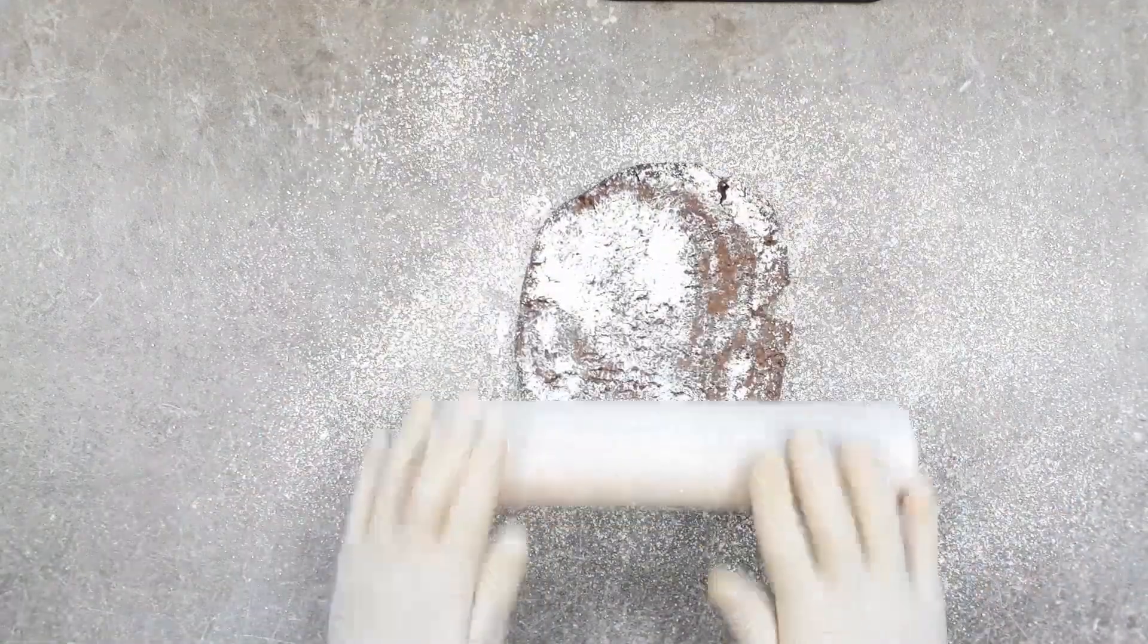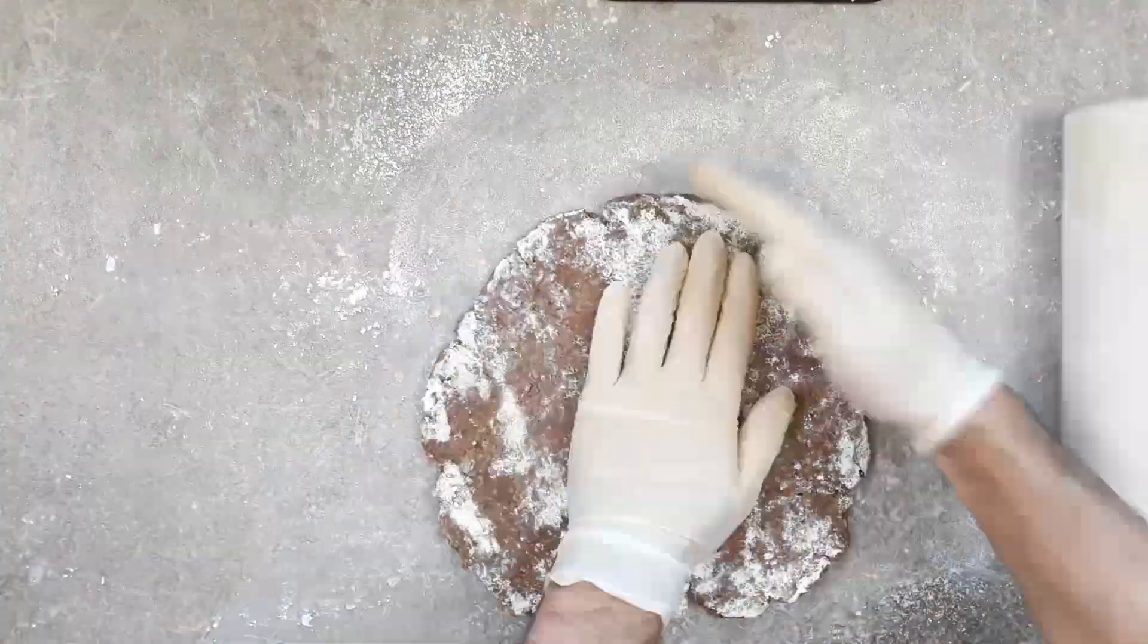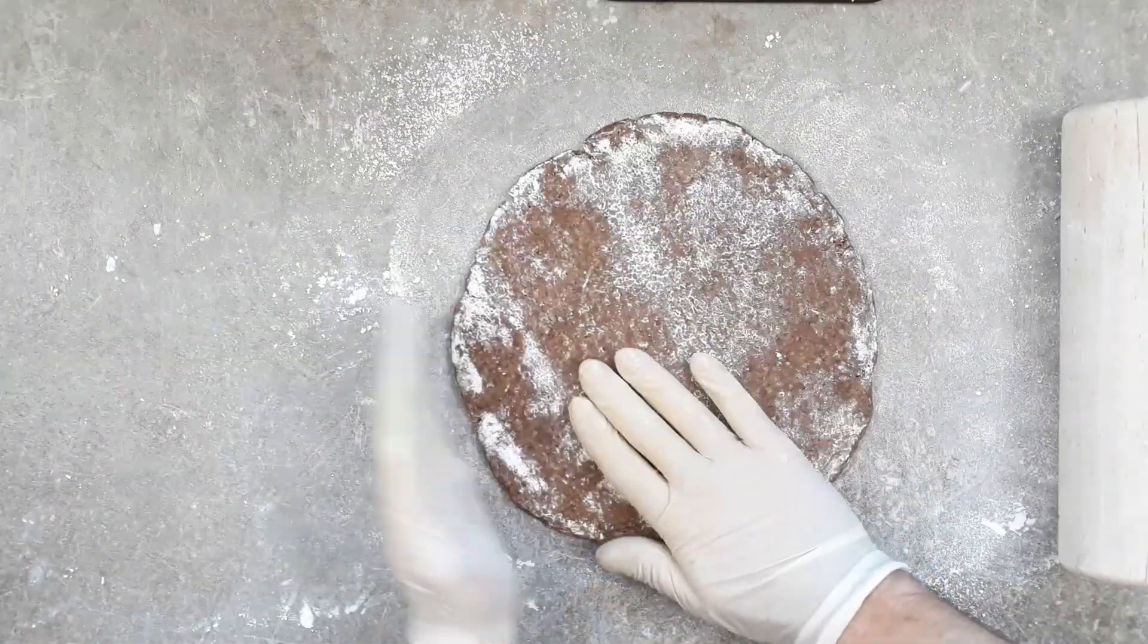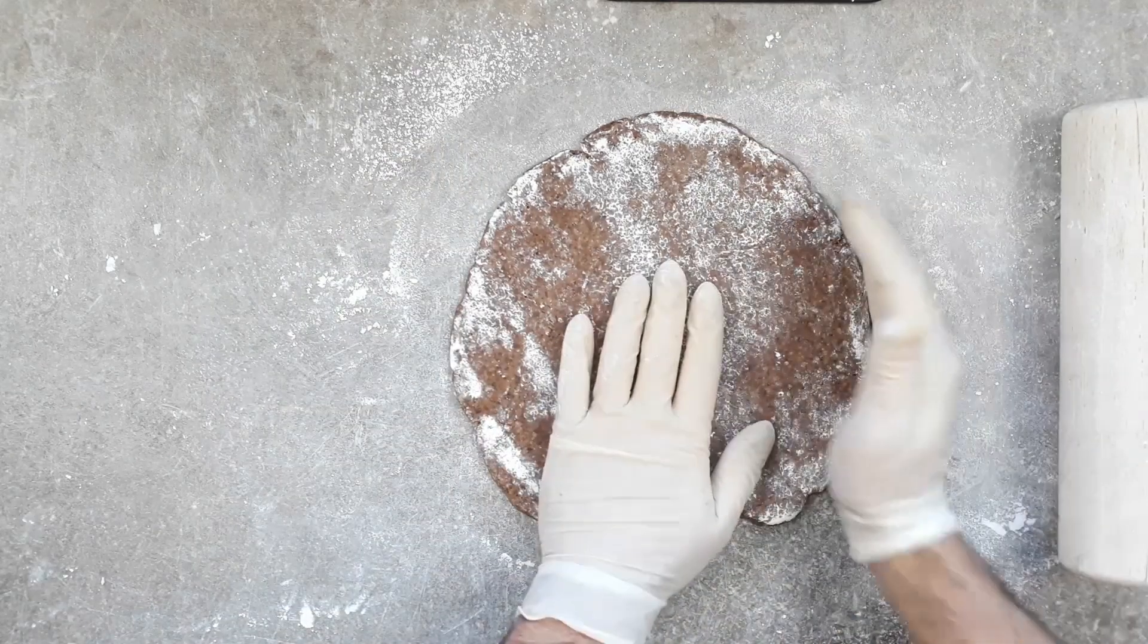And then we can just roll it out to the thickness of about half a centimetre, because we're using the European metric system. But if you're using the crazy imperial system, I can't really help you. And I'm just tidying the edges there before I start to cut these out.